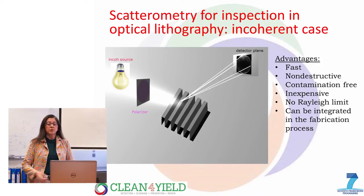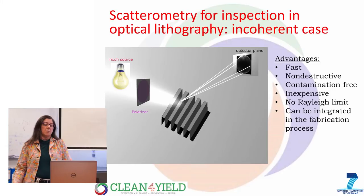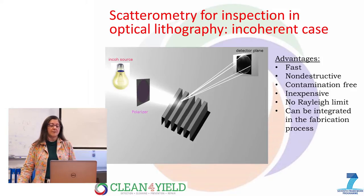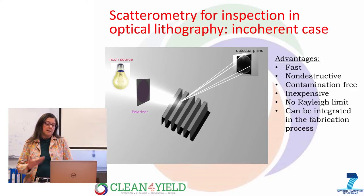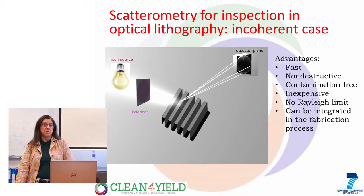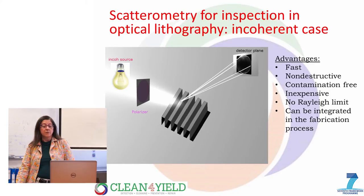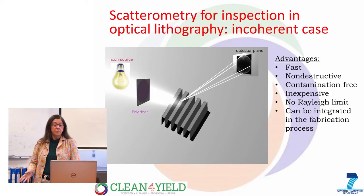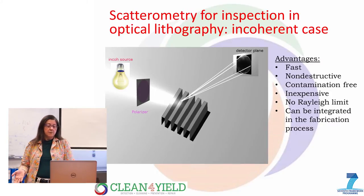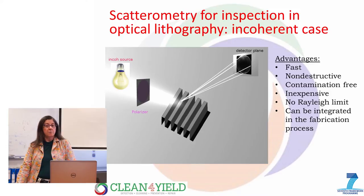Scatterometry is already being used in optical lithography with incoherent light. The idea is that you take an incoherent light source, sometimes with a polarizer, shine light into the grating, and look at the scattered light at the detector plane. The advantages of this technique are that it is very fast, non-destructive because you only shine light into the structure, contamination-free, inexpensive, has no Rayleigh or diffraction limit, and can be integrated in the fabrication process.